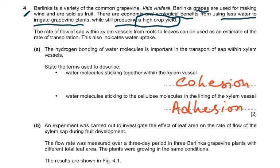The rate of flow of sap within the xylem vessels from roots to leaves can be used as an estimate of the rate of transpiration. Please remember, rate of transpiration is not in your syllabus anymore. This also indicates water uptake. I'm discussing this question because of certain parts which are still relevant.